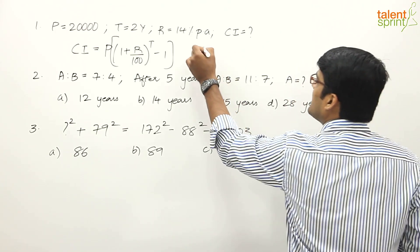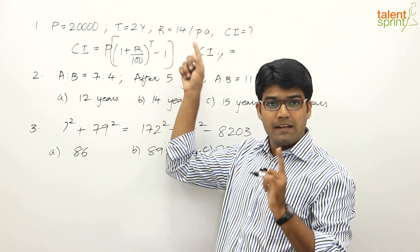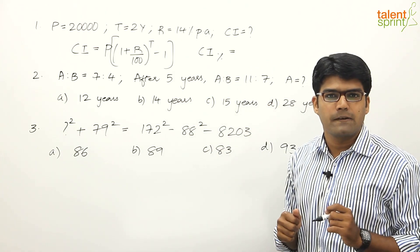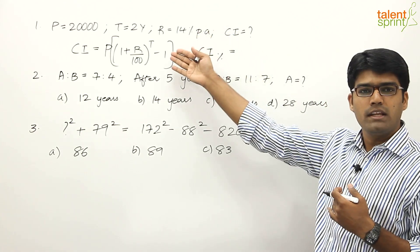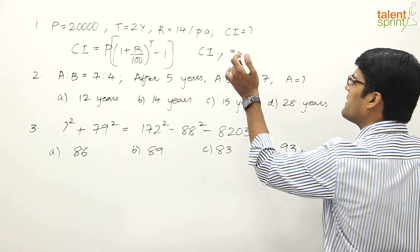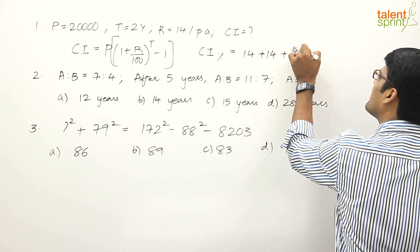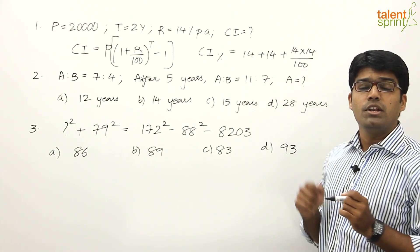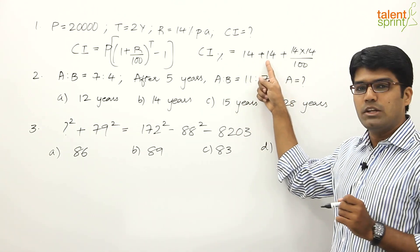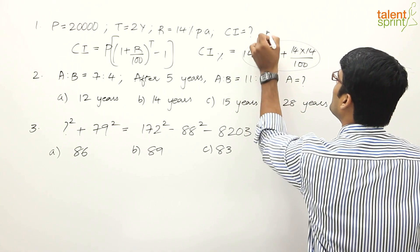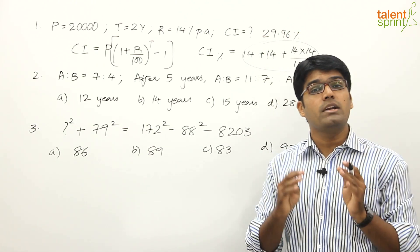So the compound interest in percentage terms equals a + b + (ab/100), where a is the rate for the first year and b is the rate for the second year. Since both years have the same rate of 14%, we get: 14 + 14 + (14 × 14)/100 = 28 + 196/100 = 28 + 1.96 = 29.96%.